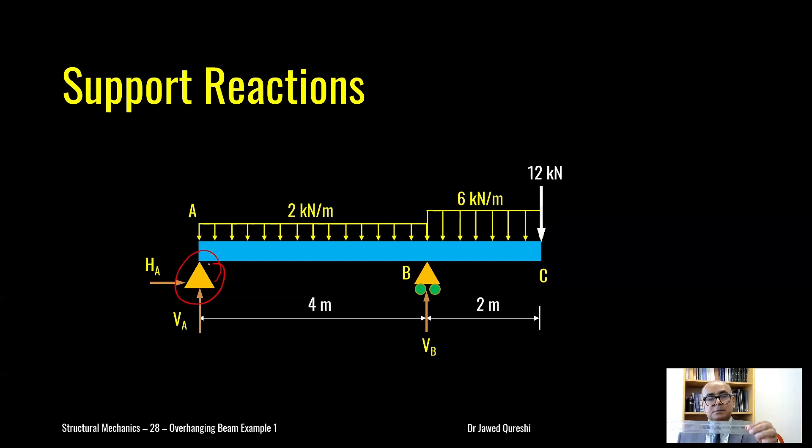A pin is similar to if I hold a ruler like this. This ruler cannot move in vertical direction. It cannot move in horizontal direction. While a roller is like a finger where it can roll in horizontal direction, it can rotate as well but it cannot move in vertical direction.